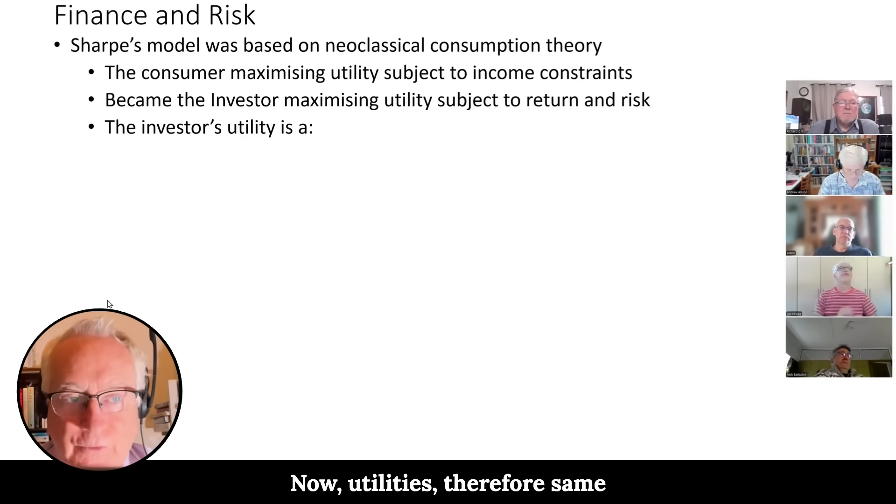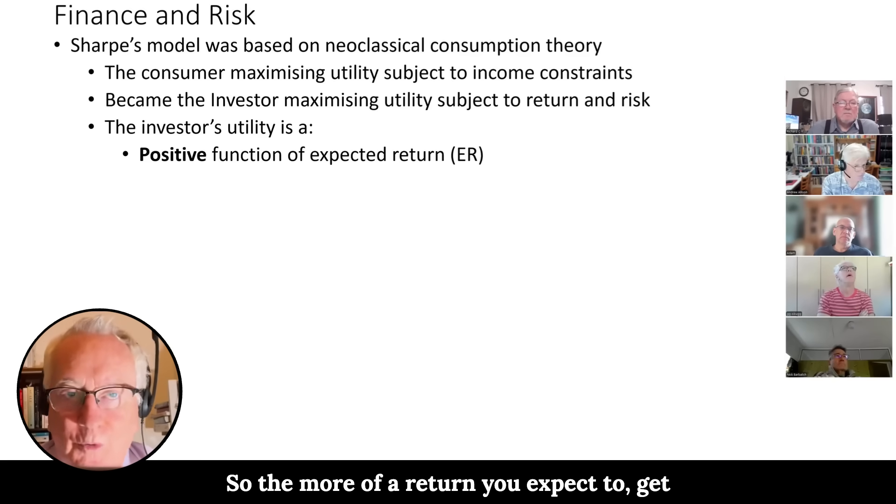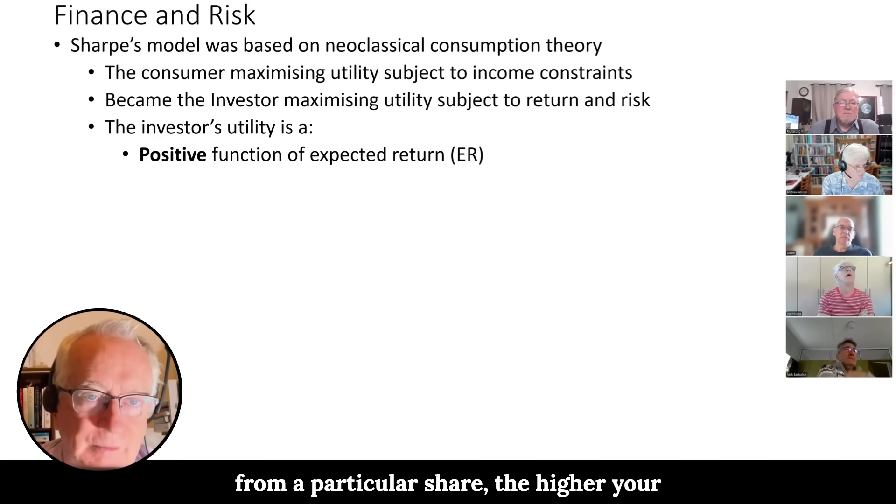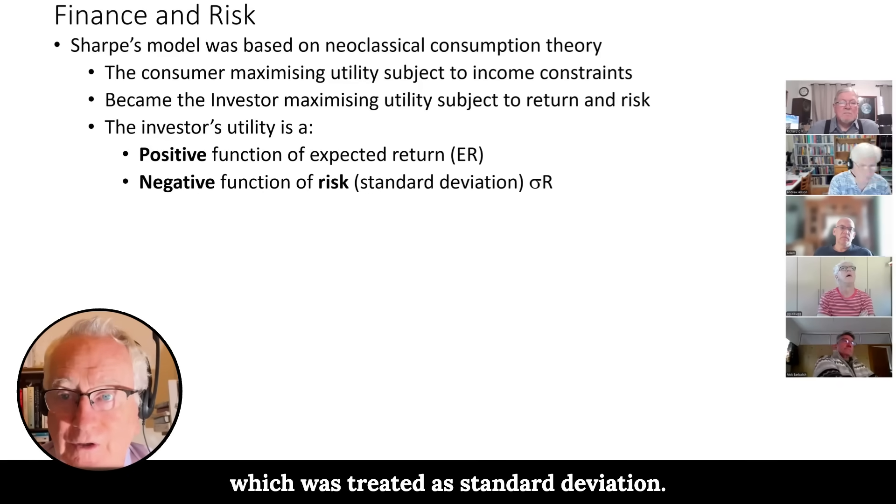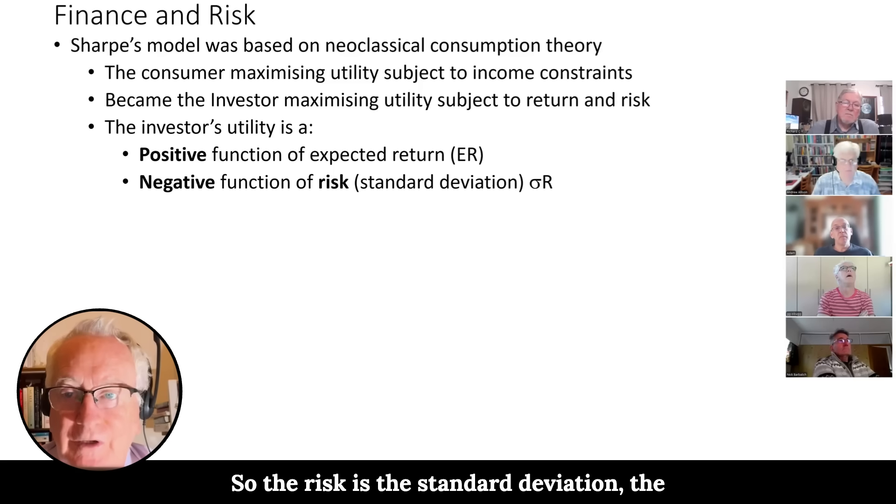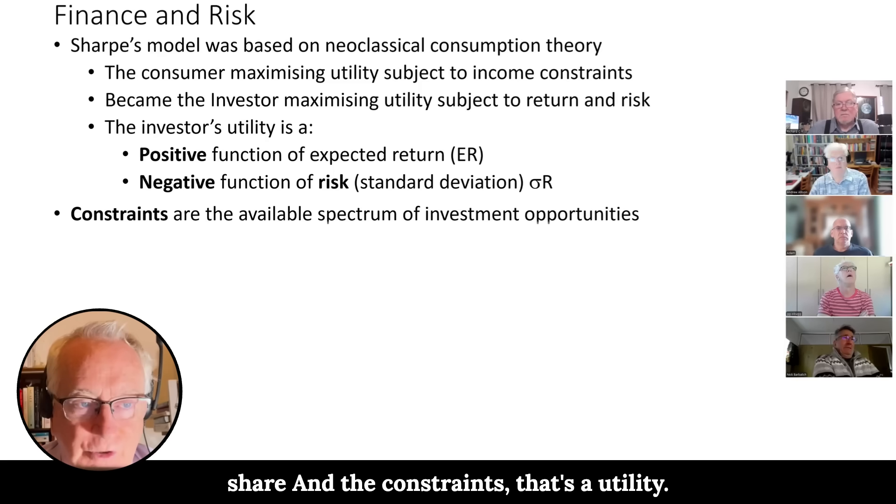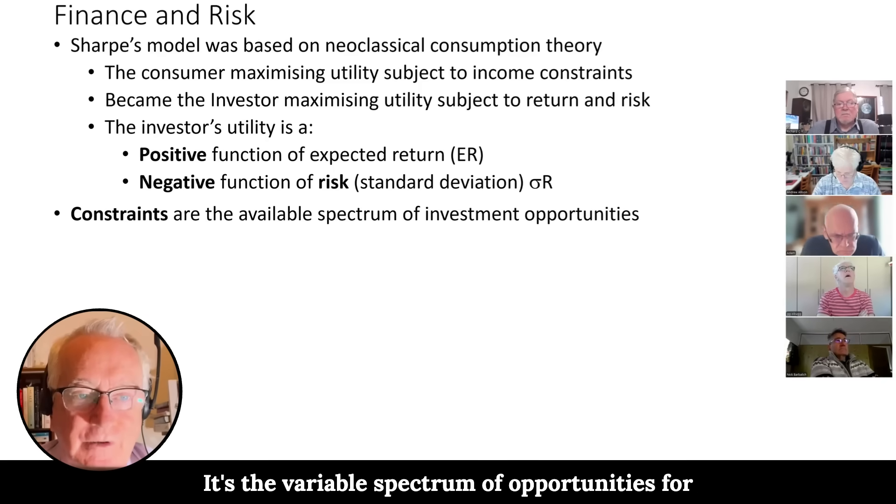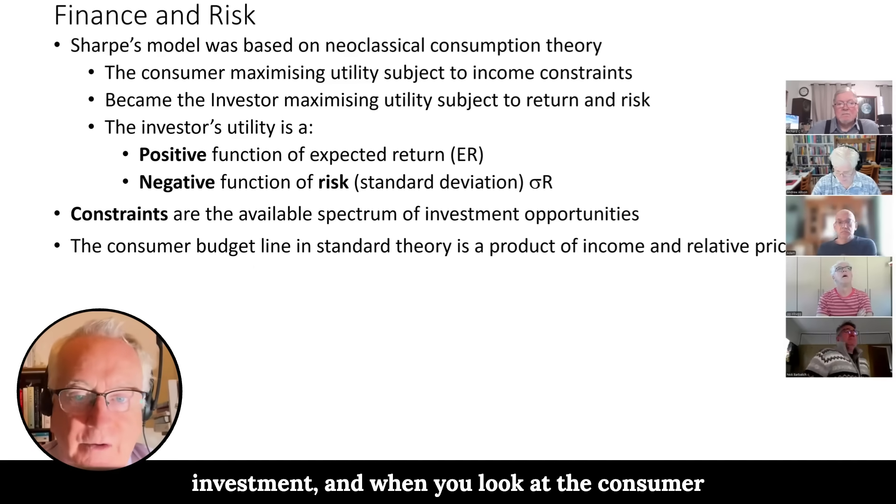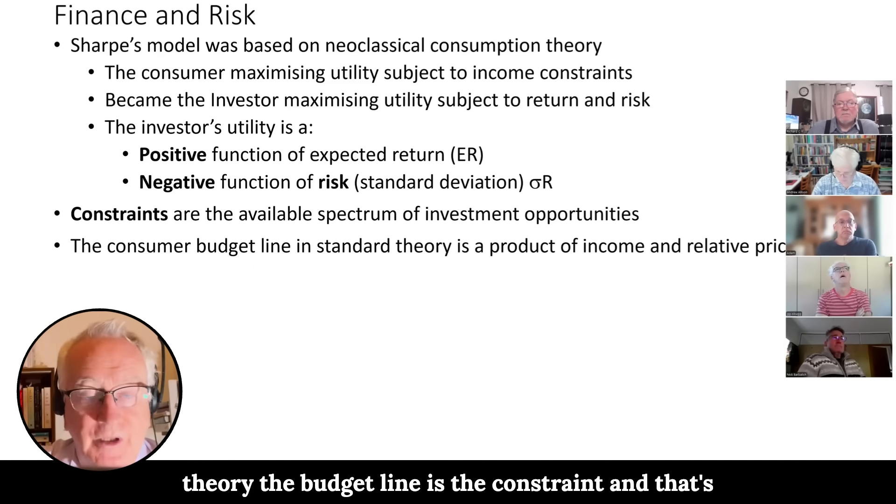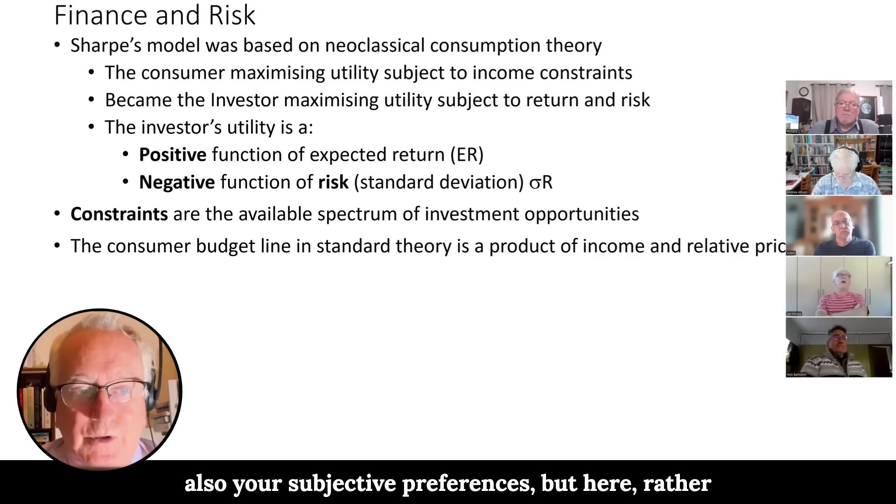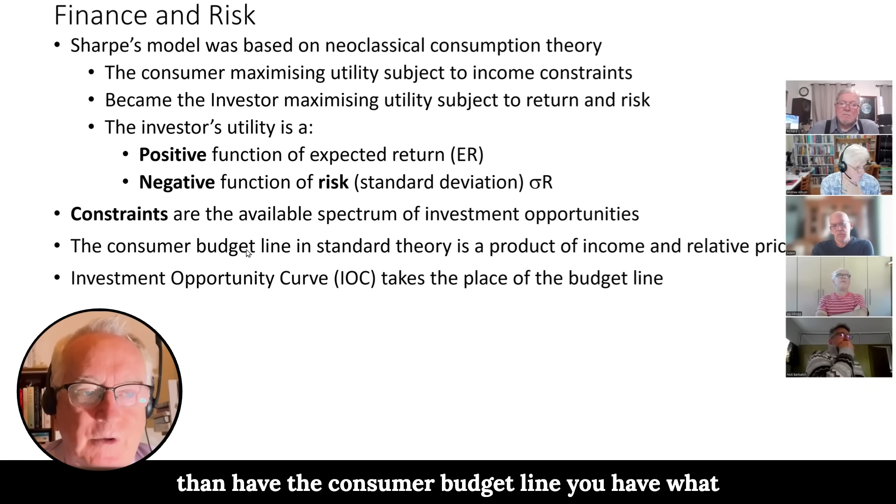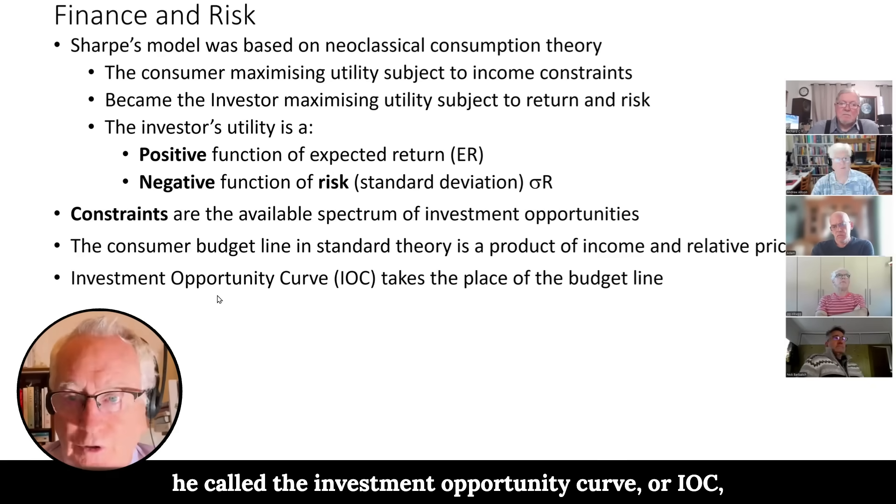Now the utility is therefore seen as a positive function of expected return. So the more of a return you're expected to get from a particular share, the higher your utility, but a negative function of risk, which was treated as standard deviation. So the risk is the standard deviation, the variation of returns over time for a particular share. And the constraints, that's a utility, what are your constraints on your utility? It's the available spectrum of opportunities for investment. And when you look at the consumer theory, the budget line is the constraint, and that's a product of your income and relative prices and also your subjective preferences. But here, rather than have the consumer budget line, you have what you call the investment opportunity curve or IOC.